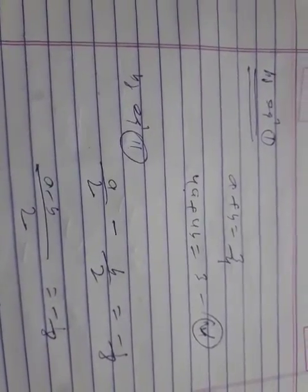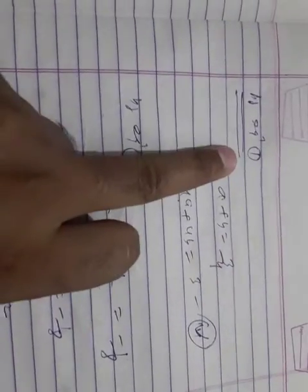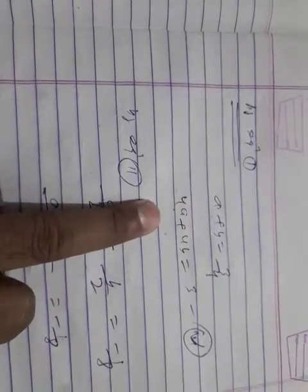Now by equation number 1, a plus b is equal to 3 by 4. Taking 4 to the LHS, then 4a plus 4b equals 3. Equation number 5.